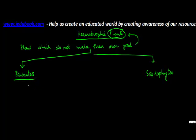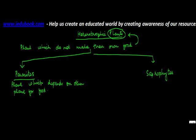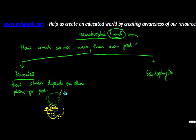A parasite is technically a plant which depends on another plant for food. Many times you would have noticed a situation where there would be a tree, and there would be certain yellow twining branches with leaves, all of them being yellow in color. These plants depend on the tree for their food. So the tree is known as the host and this plant is known as the parasite plant.